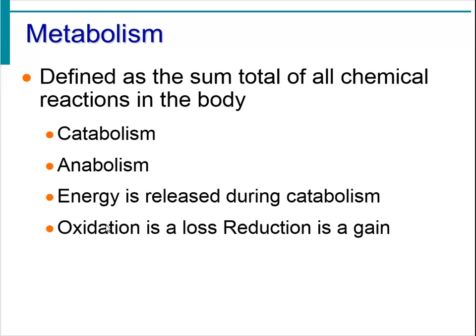Oxidation and reduction are two terms used in chemistry. When a chemical is oxidized, it has lost something. When it is reduced, it has gained something, and that really messes with people's minds a little bit — that reduction is a gain. So if I add a phosphate group onto chemical X, I will say that chemical X has been reduced because it has gained something extra.